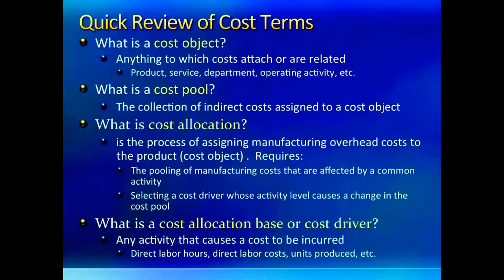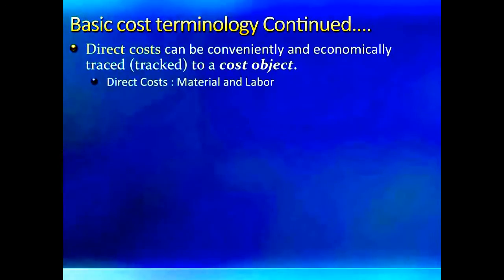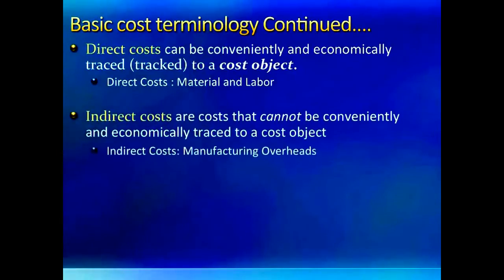An allocation base or cost driver typically drives the costs up or down. Typical cost drivers are direct labor hours, direct labor dollars, etc. Direct costs can be directly traced to a job — typical material and labor are direct costs. Indirect costs are all other costs that are used in manufacturing but cannot be directly traced to the job. Typically, indirect material, indirect labor, and all manufacturing overheads are indirect costs.